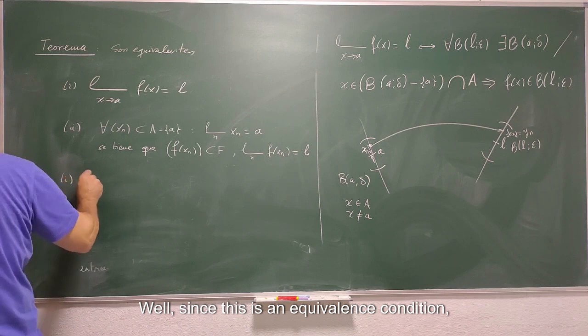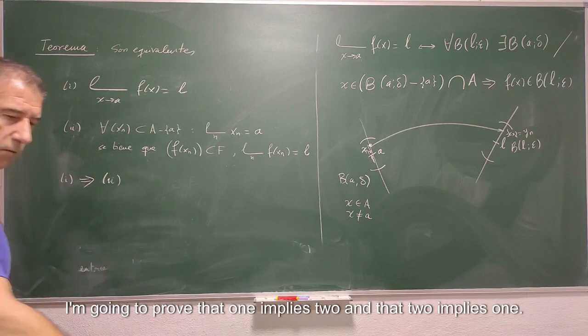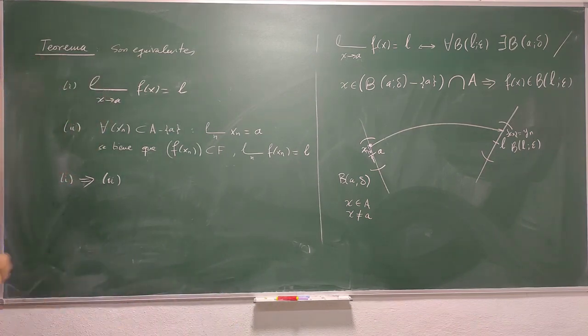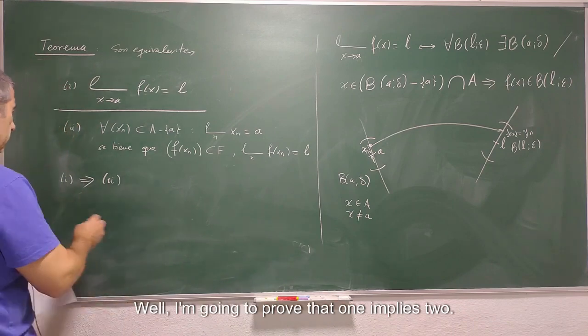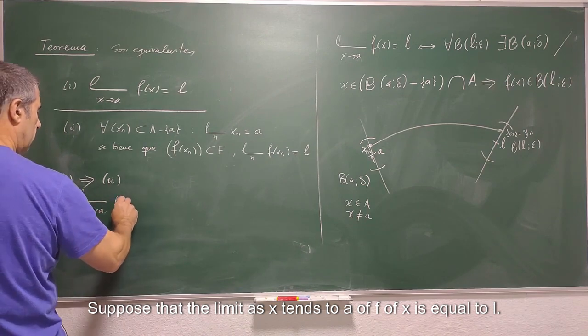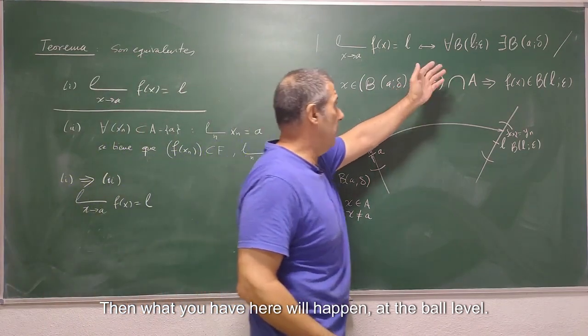Well, since this is an equivalence condition, I'm going to prove that 1 implies 2 and that 2 implies 1. I'm going to prove that 1 implies 2. Suppose that the limit as x tends to a of f of x is equal to L. Then what you have here will happen at the ball level.